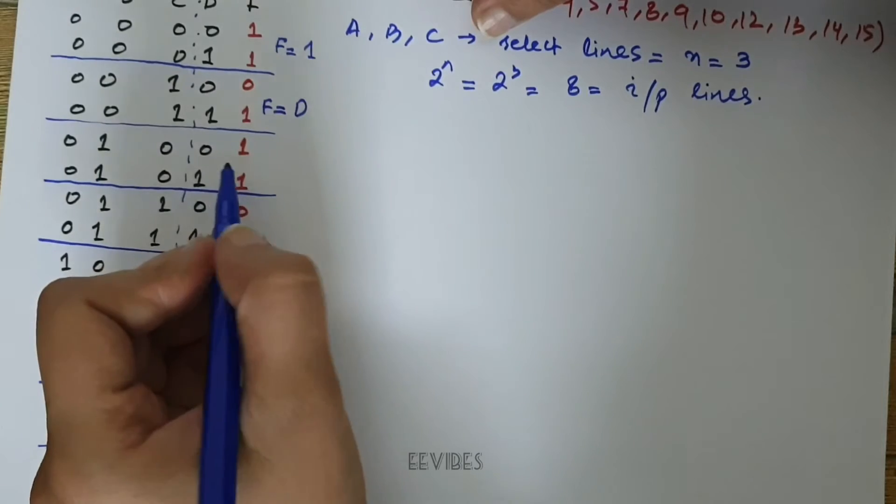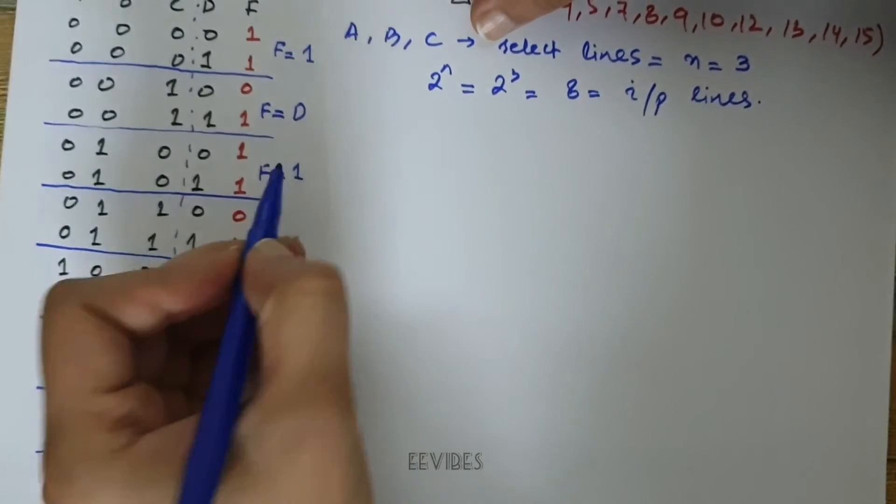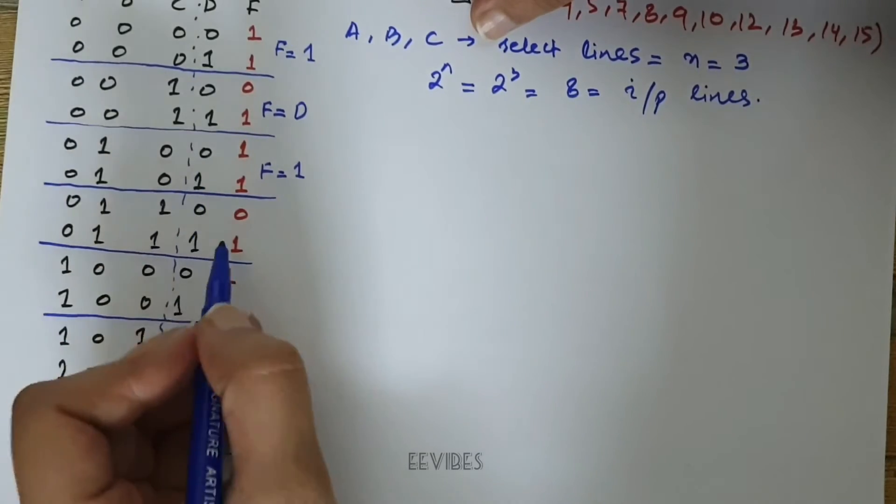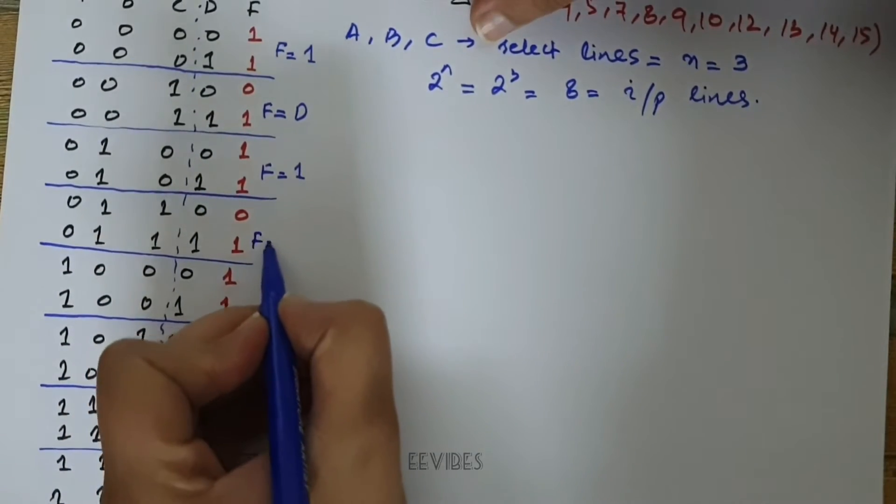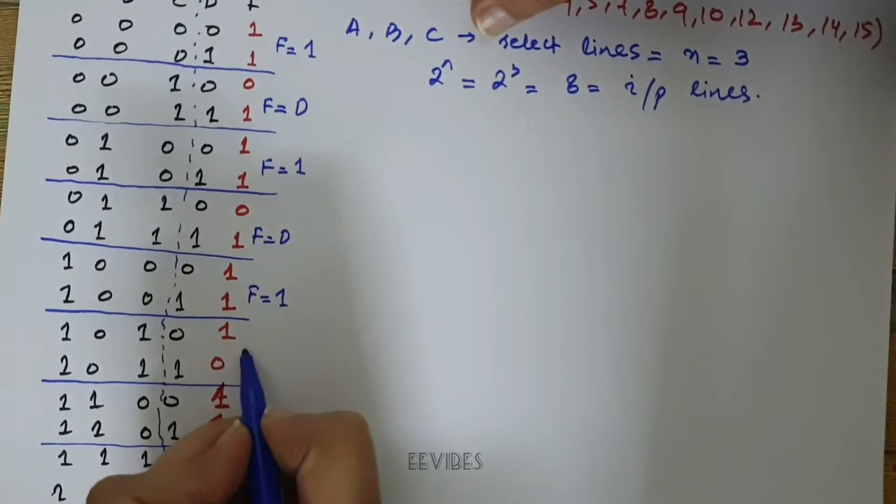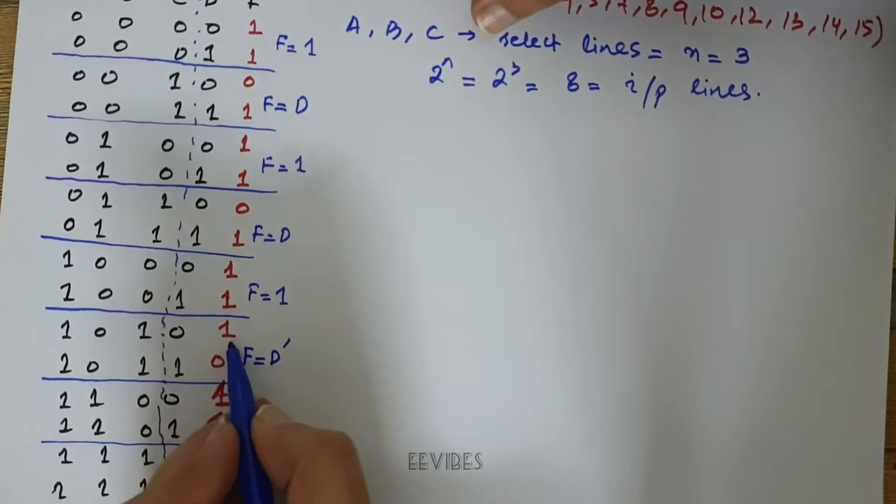Again here F retains or its value is equal to 1 no matter D is changing from 0 to 1. Here again F is equal to D. F is equal to 1. F is equal to D complement, since when D is equal to 0, F is